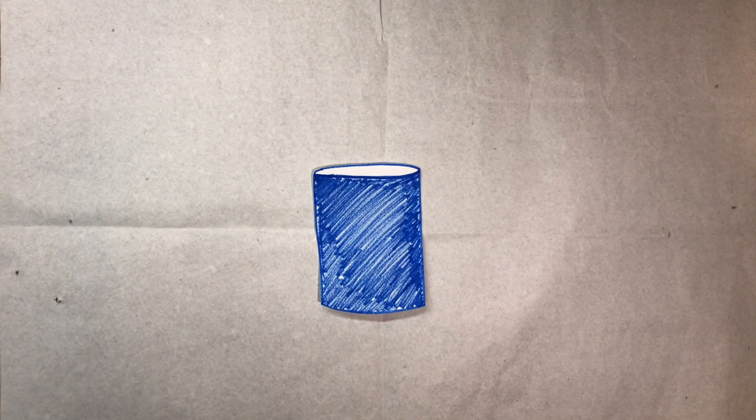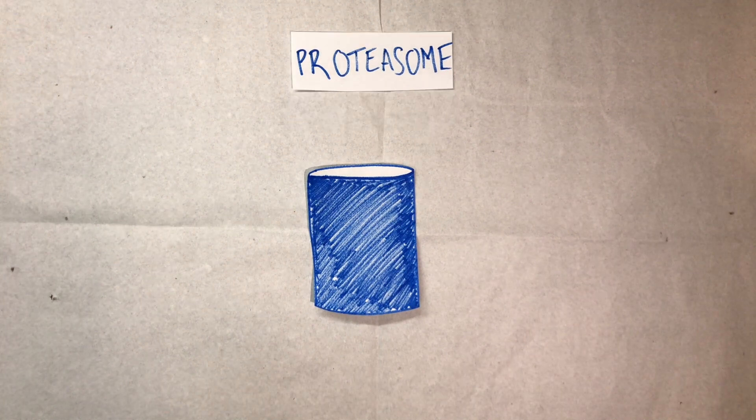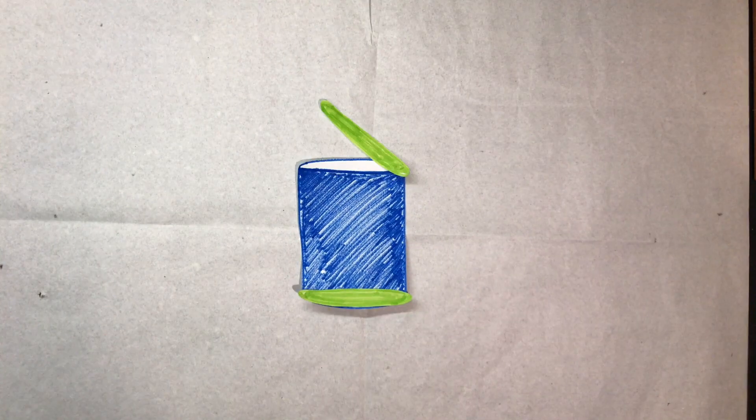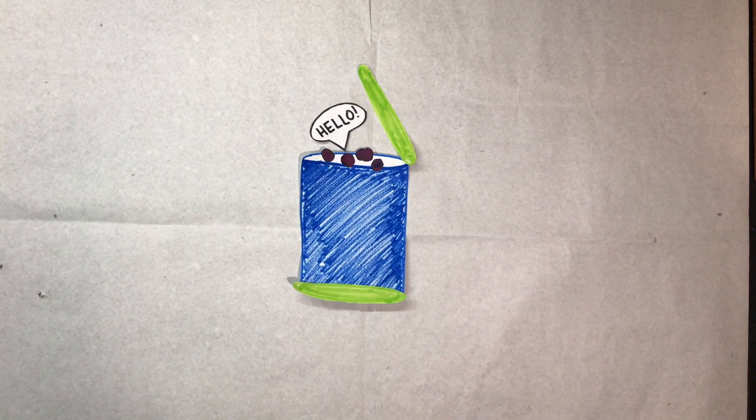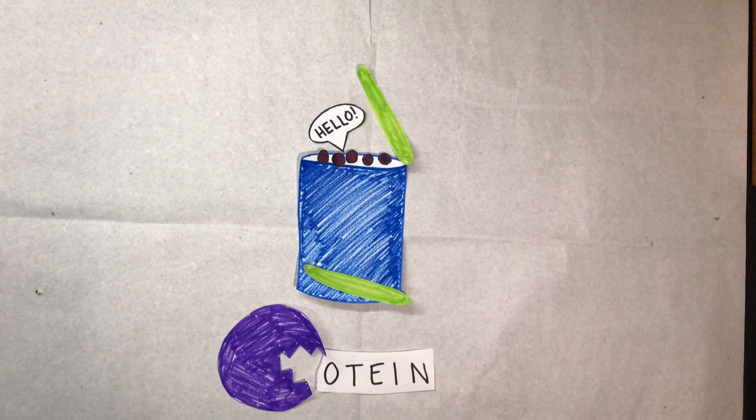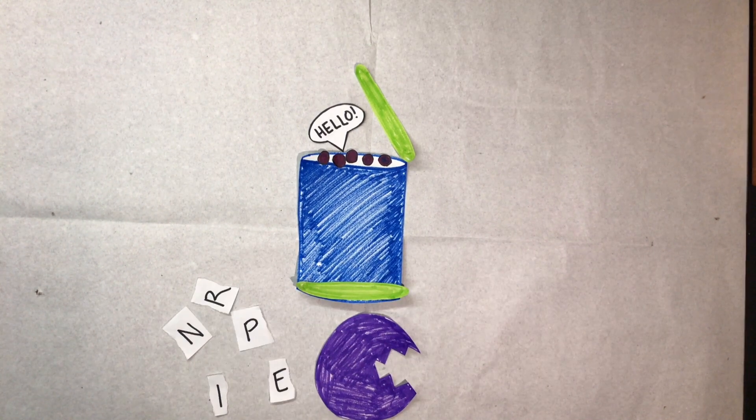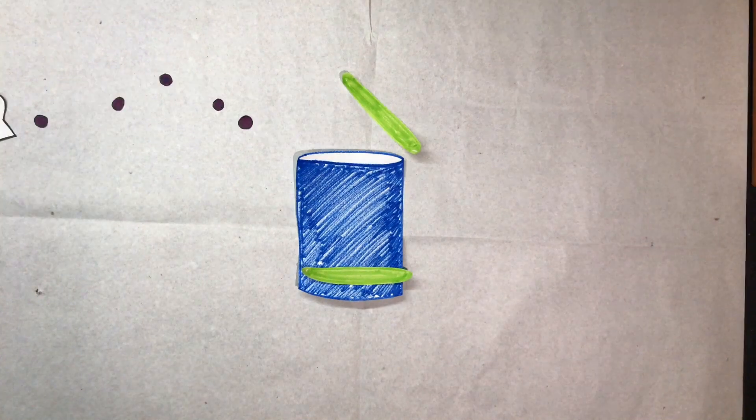This is a proteasome. A proteasome is basically a cylindrical protein molecule with caps on either end. Lining the inner surface of the cylinder are proteases, enzymes that chop up proteins into short peptides.